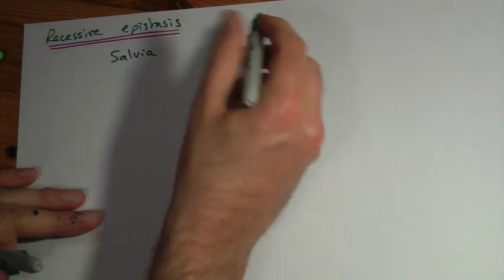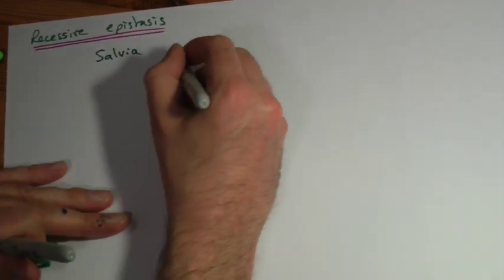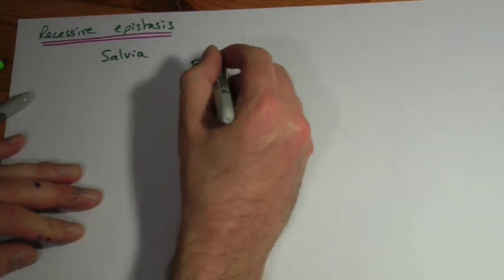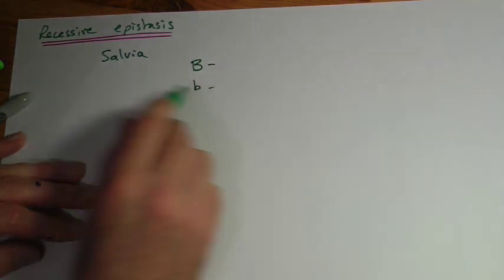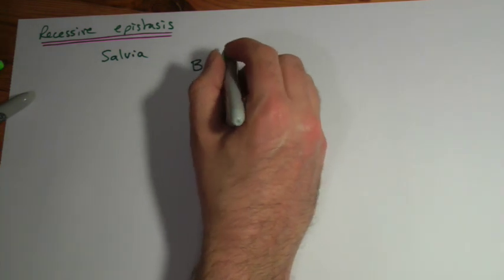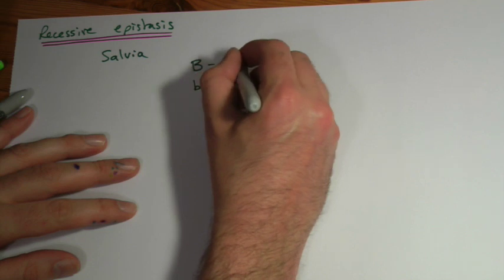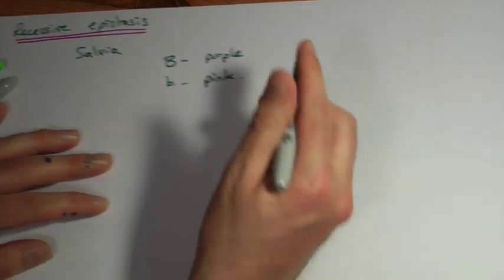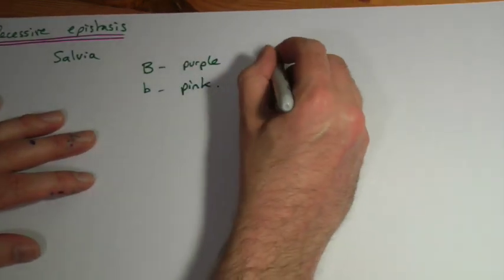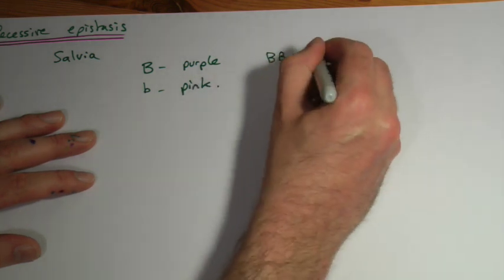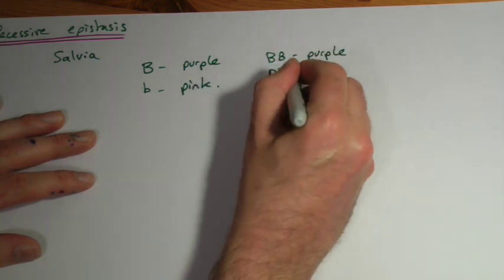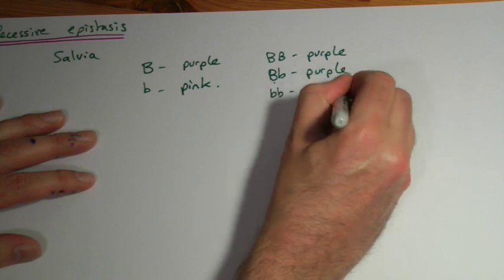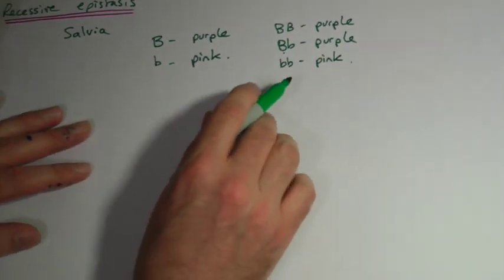It talks about the plant salvia, and it gives you what we call the hypostatic gene, or the hypostatic alleles. We're going to represent that with a capital B, the dominant, and small b for the recessive. The salvia, this will give you a purple color, and little b is pink. Now what I'd always recommend here is you write out first of all what possible combinations you can get. Homozygous dominant in this case will give you purple, heterozygous would also give you purple because of the dominant one, and the homozygous recessive one would give you pink. So write out what your possible combinations are first of all.